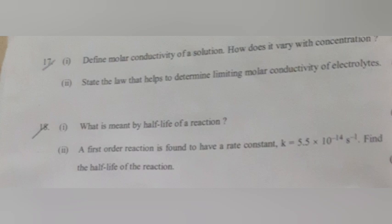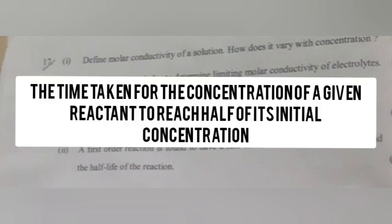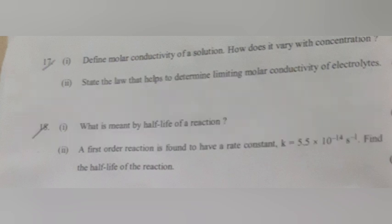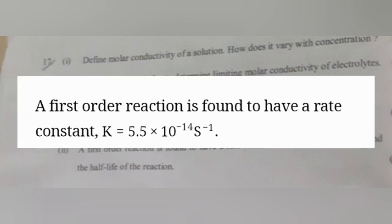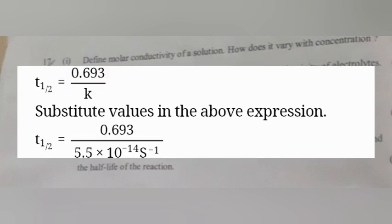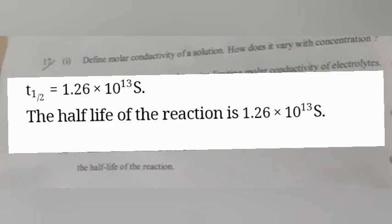Question 18, Part 1: What is meant by the half-life of a reaction? Answer: The time taken for the concentration of a given reactant to reach half of its initial concentration. Part 2: A first-order reaction has a rate constant k = 5.5 × 10⁻¹⁴ s⁻¹. Find the half-life. Answer: t½ = 0.693/k = 0.693/(5.5 × 10⁻¹⁴) = 1.26 × 10¹³ s.